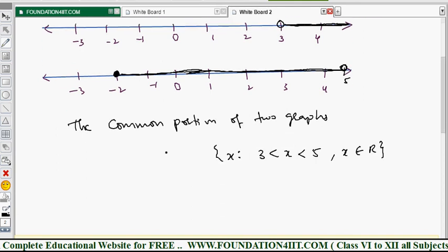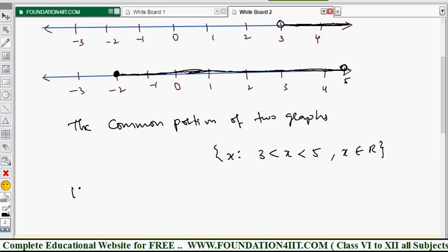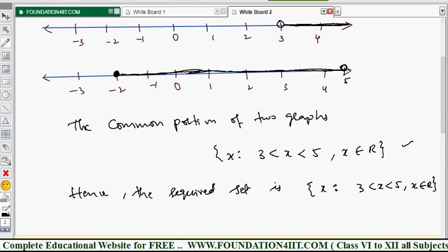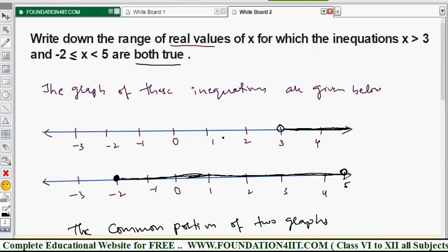So this is the required solution set. The required solution set is x such that 3 less than x less than 5, where x belongs to real numbers, which is the common portion only, the solution set for these two together, which both are true. Whenever we have two inequalities, we can solve by making the graph also.